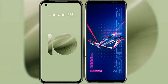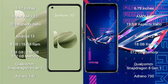I will compare the new Asus Zenfone 10 with the Asus ROG Phone 6 Pro. The Asus Zenfone 10 comes with a 5.92-inch Super AMOLED display and an aspect ratio of 20:9. The Asus ROG Phone 6 Pro comes with a 6.78-inch AMOLED display and an aspect ratio of 19.5:9.